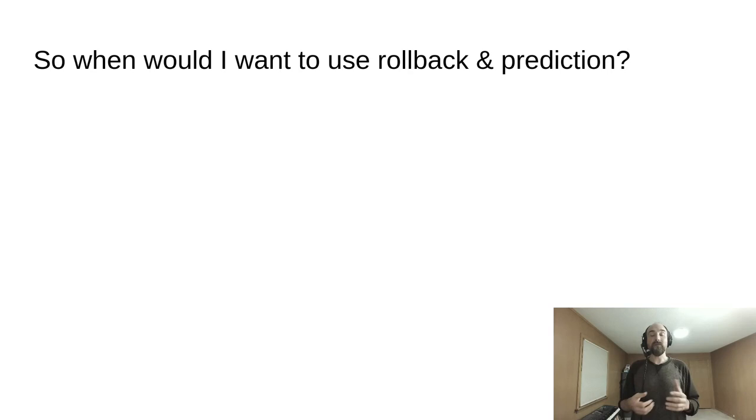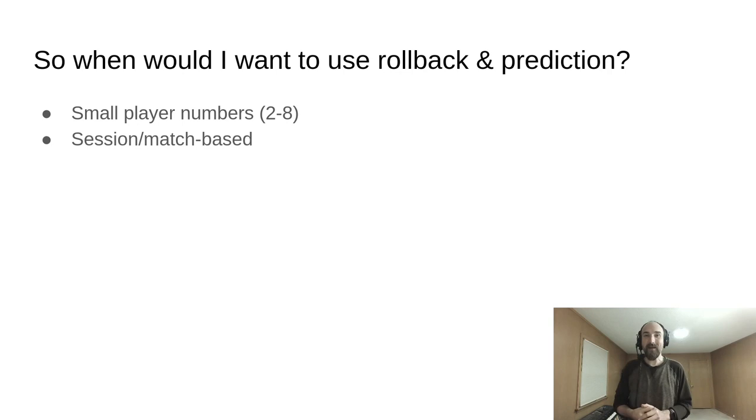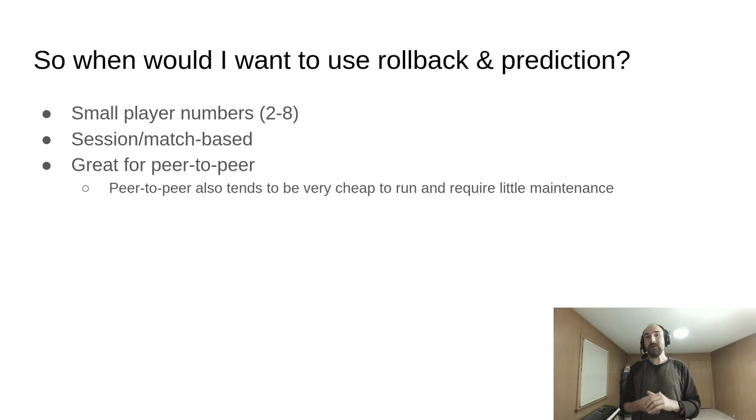So when would you want to use rollback and prediction? In a game with a small number of players, roughly two to eight, that is session or match based. There is some debate on the maximum number of players, but you aren't going to be able to do 60 or 100 player matches, certainly no MMOs or persistent worlds. Rollback and prediction works fine for client-server, but it works great for peer-to-peer, which is awesome because peer-to-peer tends to be pretty cheap to run and requires very little maintenance.